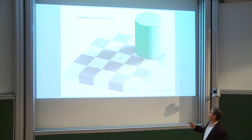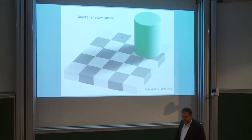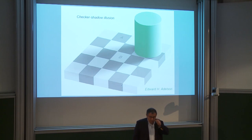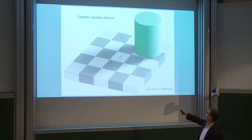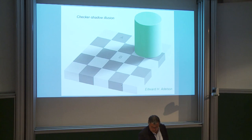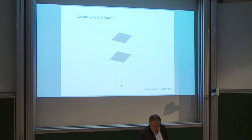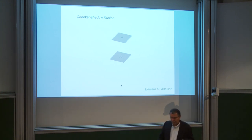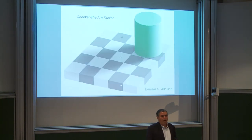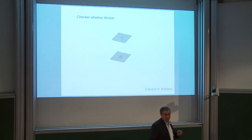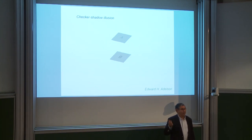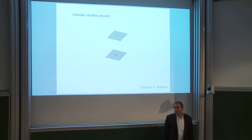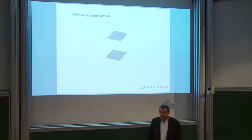One of my favorite illusions is from my colleague Ted Adelson at MIT. Anybody looking at this picture will think of A as a gray square and B as a white square. But if you Photoshop this and get rid of everything but A and B, you'll find out they're exactly the same. That's because your brain is making all these assumptions about what's going on in the scene. Your brain interprets A as gray and B as white, but of course they're not. And it's a feature — nobody said the brain should be a photon detector. The brain is meant to interpret scenes.